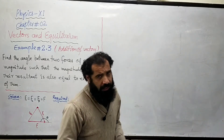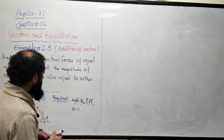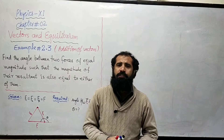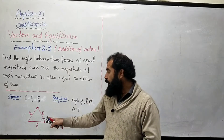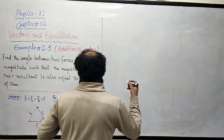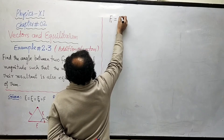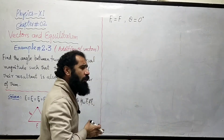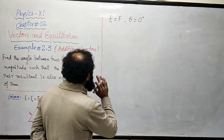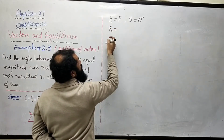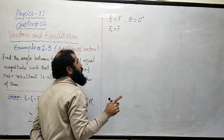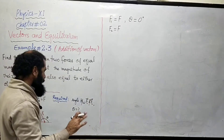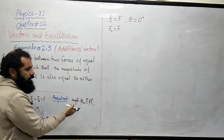Analytically is problem ko kaise solve karte hain? Chunke problem ne yeh nahi bataya ke F1 x-axis ke along hai ya y-axis ke along, lekin apni convenience ke liye mein F1 ko x-axis ke along assume kar leta hoon. F1 ka magnitude F hai aur woh positive x-axis ke saath zero degree ka angle bana raha hai. F2 dusra vector hai jiska magnitude F hai, aur un dono ke darmiyan angle theta maan lete hain.